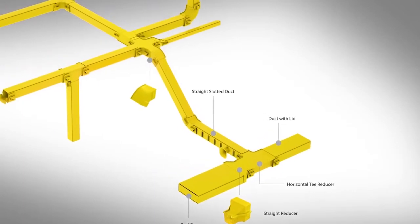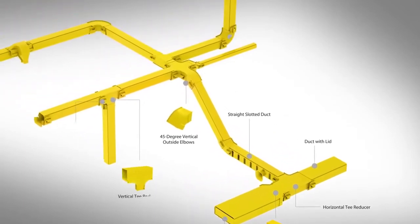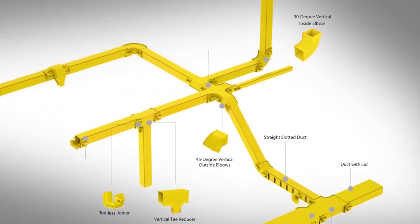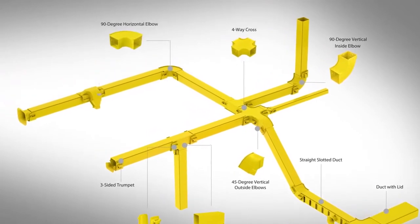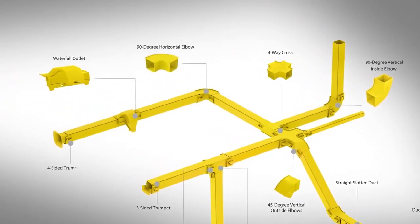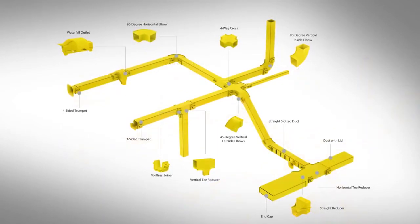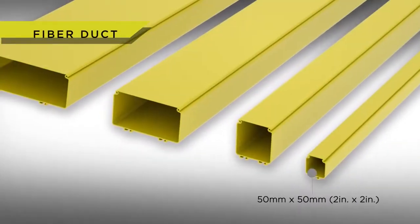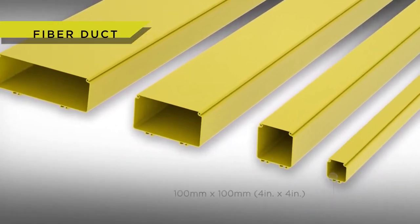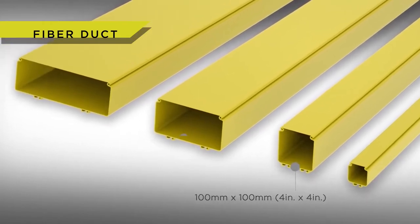The system includes straight duct, elbows, tees, crosses, reducers and innovative outlets, all designed to help you meet the needs of your data center space. Available in a range of sizes, the ducting provides a more secure, reliable and effective alternative to traditional fiber routing solutions such as wire basket tray.